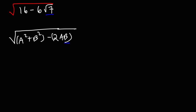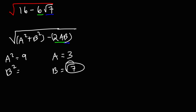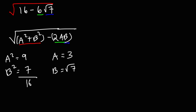Let's assume that b is equal to the square root of 7. If that's the case, 6 has to equal 2a. If 6 is equal to 2a, then 6 divided by 2 gives us a, which is 3. So a squared is going to be 3 squared, which is 9. b squared is the square of the square root of 7, which is 7. We need to make sure that a squared plus b squared equals 16 — and it is, because 9 plus 7 is 16.